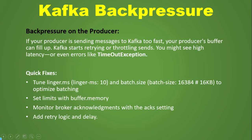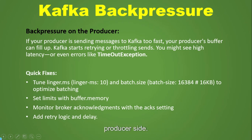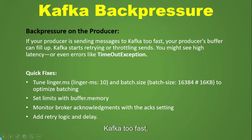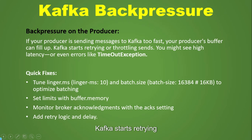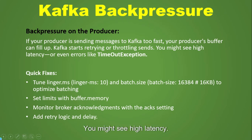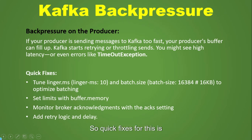The first way is backpressure on the producer side. If your producer is sending messages to Kafka too fast, your producer buffer can fill up, Kafka starts retrying or throttling sends, and you might see high latency or even errors like TimeoutException. A quick fix for this is to tune linger.ms — for example, set linger.ms to 10.